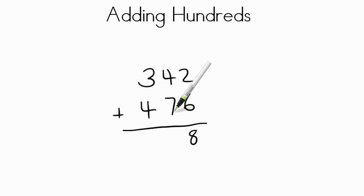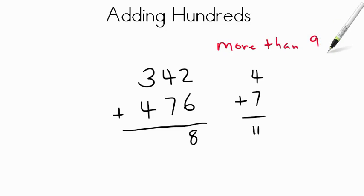Now, if we look here at the tens, we have seven tens plus four tens. Now, four plus seven is 11. Now, here's a rule you need to remember. Whether you're adding in the ones, the tens, or the hundreds, if it's more than nine, you must carry or you must regroup.